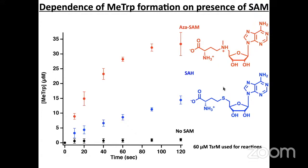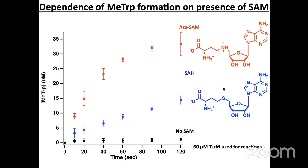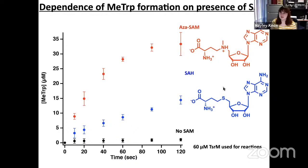Wilfred asks: in the thiopeptide field, people have sometimes looked at tryptophan analogs — if you replace the indole with analogs where you no longer have the N1 hydrogen to deprotonate, what happens? We tried a number of different tryptophan analogs — replacing N1 with oxygen, adding a methyl group at N1, and replacing it with sulfur. Activity was very, very low in all cases.